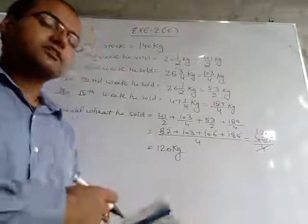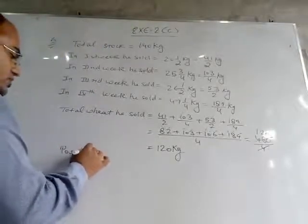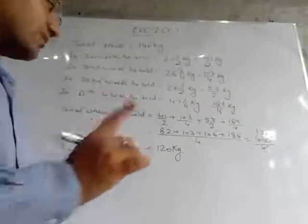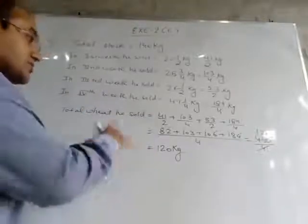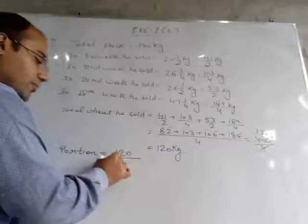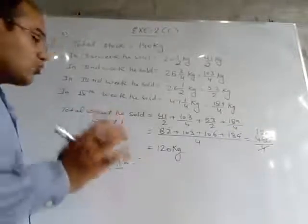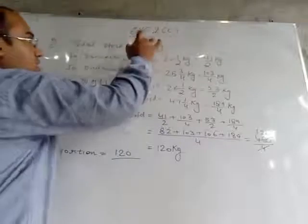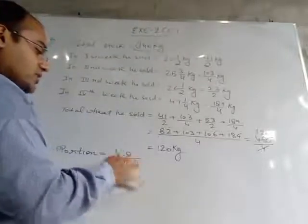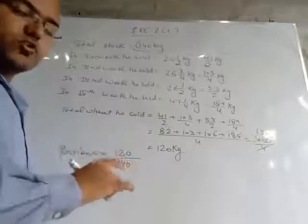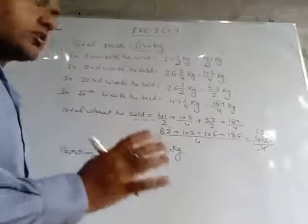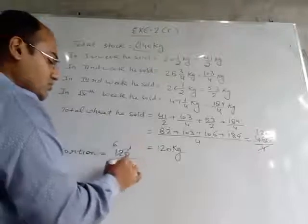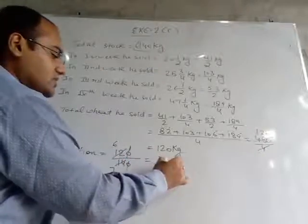What portion of stock does he sell? To find the portion, we write how much wheat he sold in the numerator — 120 — and the total stock in the denominator — 140. Cancelling the zeros and simplifying: 12/14 reduces to 6/7. The final answer is 6/7.